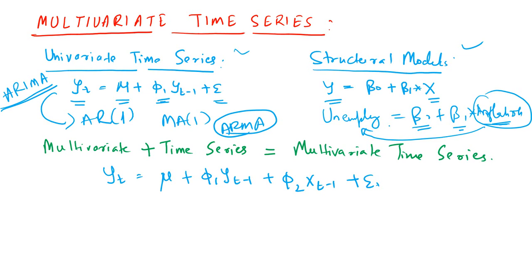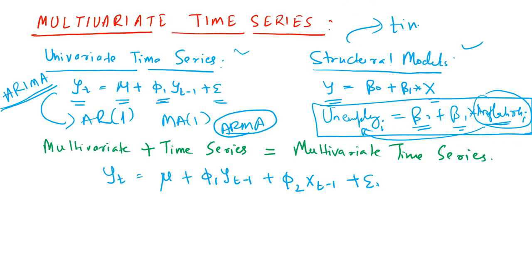We do not have a time component in structural models. We can have unemployment rate for different states in the US, India, or in different countries in Europe — unemployment rates and inflation rates across different countries. But normally, we do not have time series variables, variables which change with time. One reason time-varying variables are not present in structural models is because of the problem of autocorrelation.